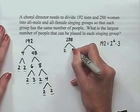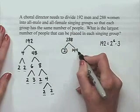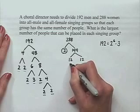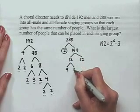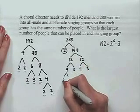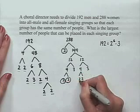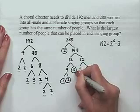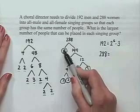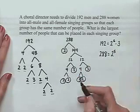Now let's look at 288. 288 can be broken down into 2 times 144; 144 is 12 times 12; each 12 can be broken into 4 times 3; and each 4 is 2 times 2. Counting up, we have 5 powers of 2. So 288 equals 2 to the 5th power times 3 squared.